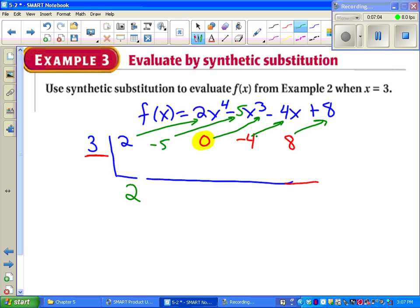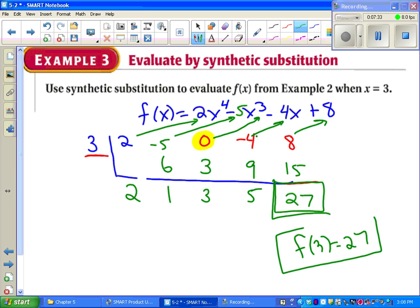Now we try this again. 3 times 2, 6. Add those up, we get 1. 3 times 1, 3. Add those up, we get 3. 3 times 3, 9. Add those up. 3 times 5 is 15. Add those up. And let's look at the biggest number I see in this whole problem. It's 27. By the way, that last number that we came up with is f of 3. So we would write f of 3 equals 27. The reason I want to point out that the biggest number I even see is 27, if you go back and do regular substitution, remember we came up with a number that was more than 5 times as big, 162. This is a lot faster, a lot easier. Practice these in the guided practice right away so you can see how much faster it is.